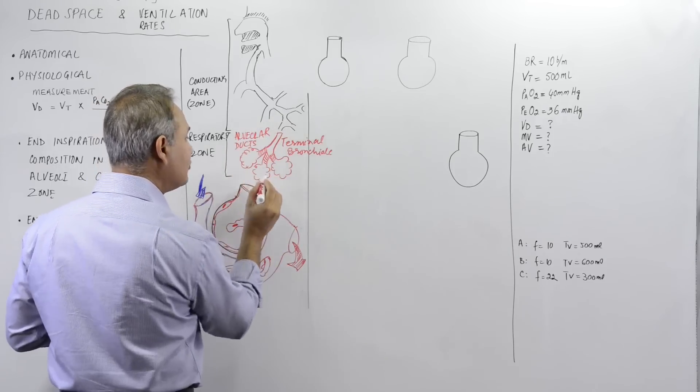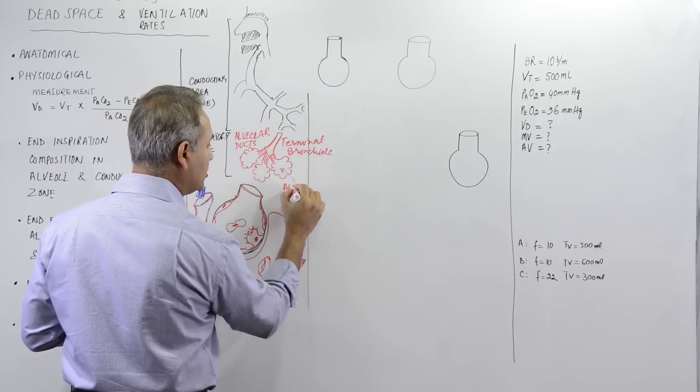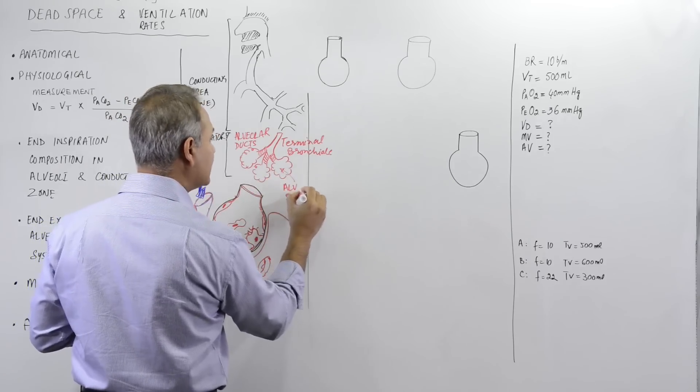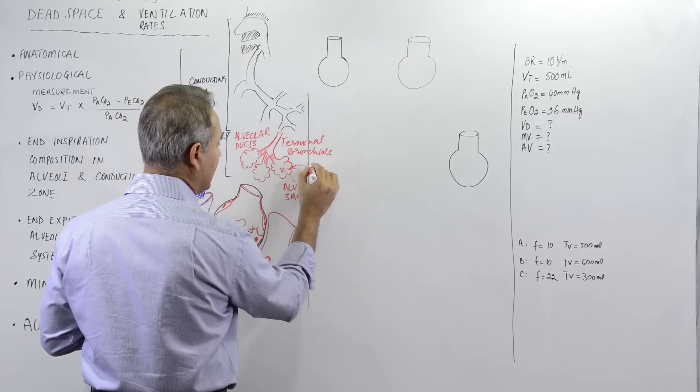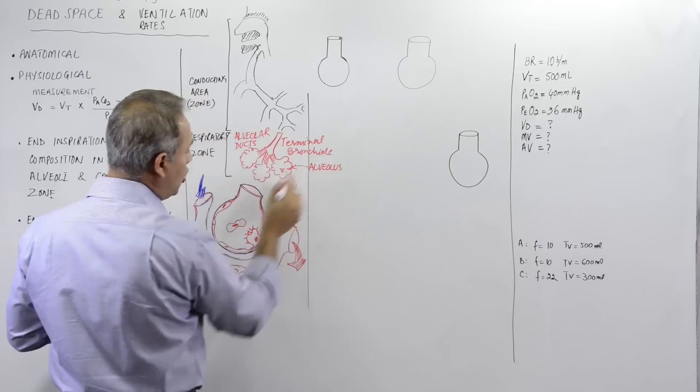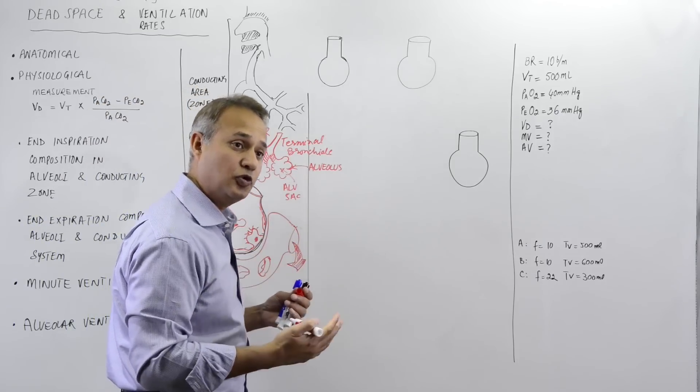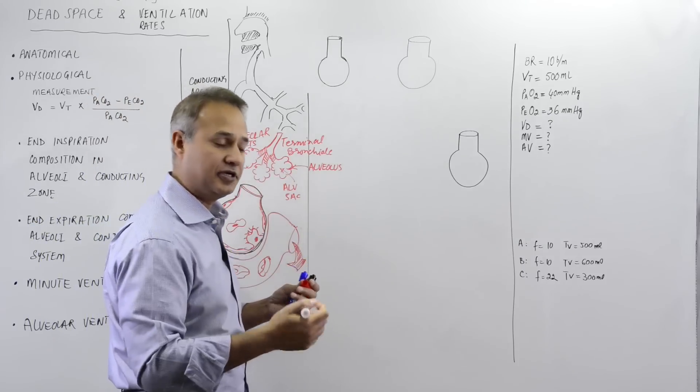Alveolar sacs. So this area is called alveolar sac and then individual alveoli, alveolus, alveolus. This all is called the respiratory zone. Why is it called the respiratory zone? Because gaseous exchange can happen here.